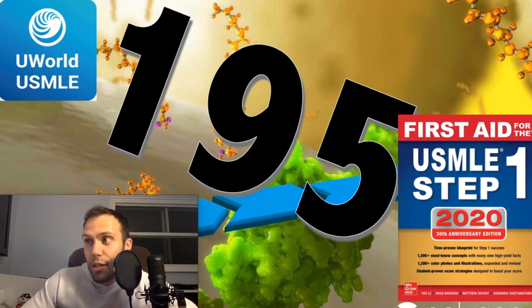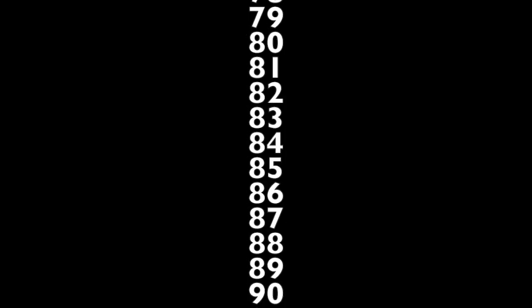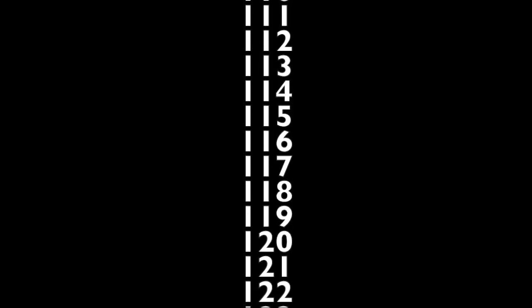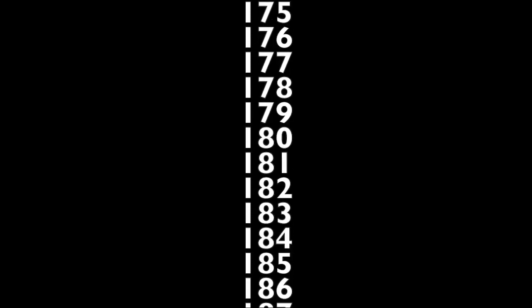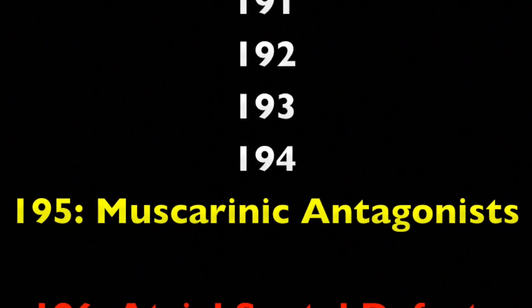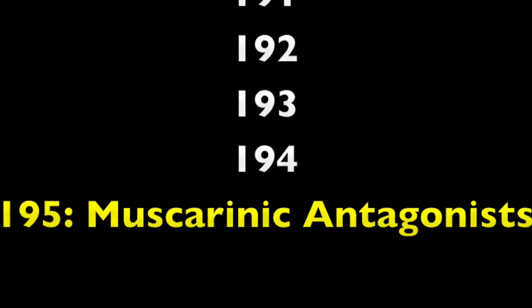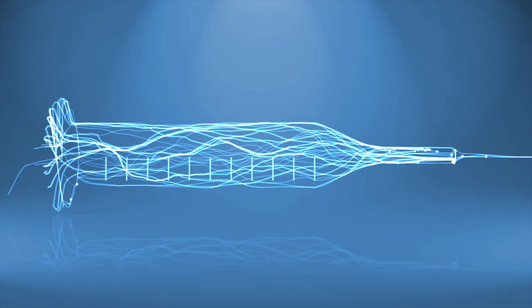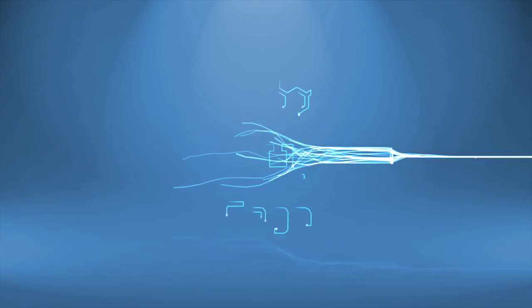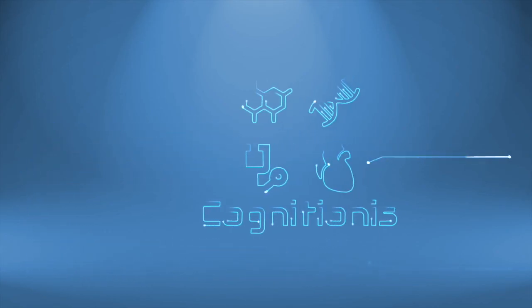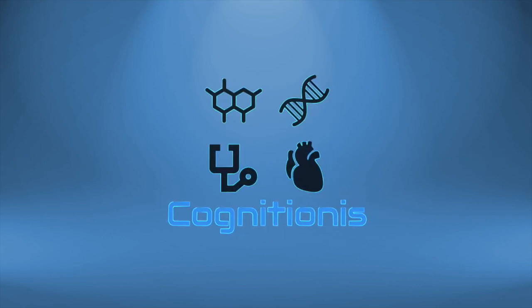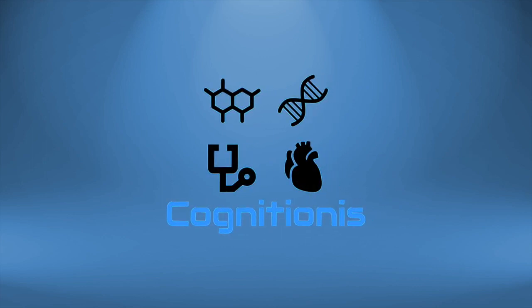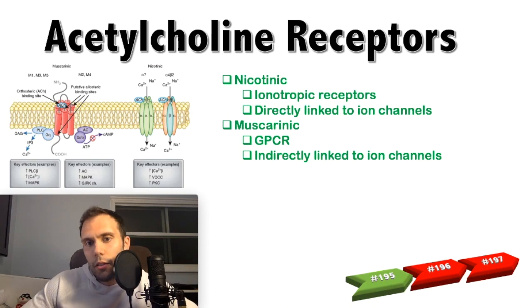Hey everybody, welcome to this video on topic 195 in the countdown of the 200 high-yield topics for USMLE Step 1. Let's start by talking a little bit about acetylcholine receptors.